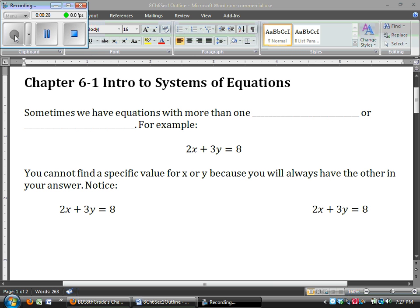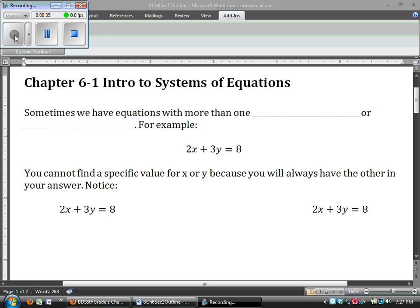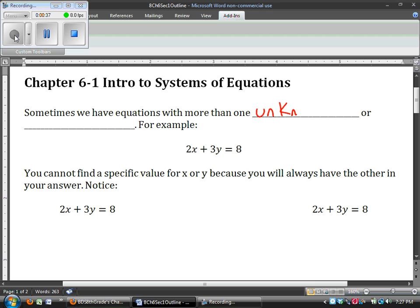So where systems come from is sometimes we have equations that have more than one unknown, which is also called a variable. That's something we've known, that we can have two different variables in the same equation.